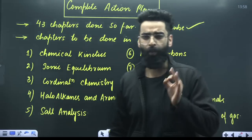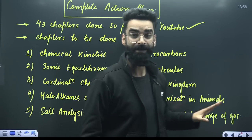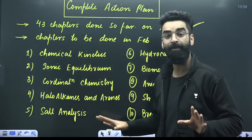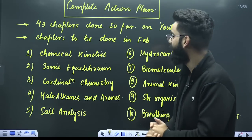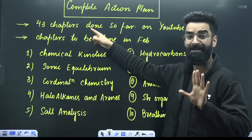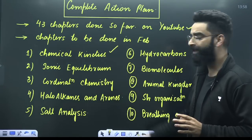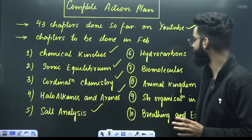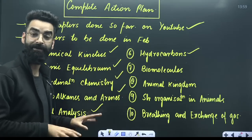Now, what are the chapters we are planning to cover in the month of February? Almost 60% of the syllabus is done; now remaining 40%. This month we shall be doing Chemical Kinetics, Ionic Equilibrium, Coordination Chemistry, Haloalkanes and Haloarenes, Salt Analysis, and Hydrocarbons. These are the Chemistry chapters we shall be doing on this channel in the month of February.